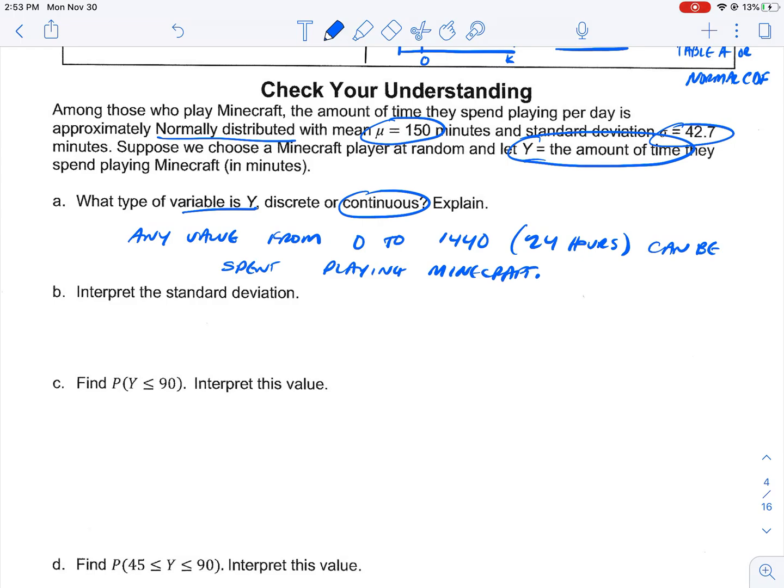And so, when we interpret the standard deviation, remember the standard deviation was 42.7 minutes and our mean was 150 minutes. What's the standard deviation mean? So, the amount of time spent playing Minecraft.